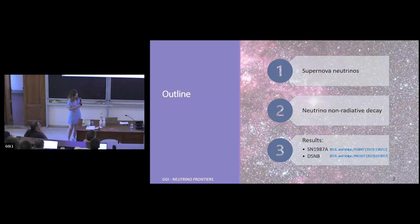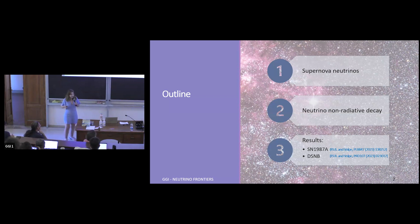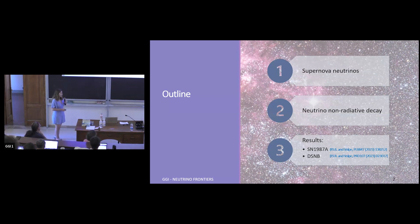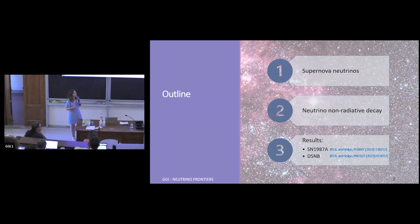This is the outline of my presentation. I'll start by explaining what supernova neutrinos are and how we can describe them. Then I'll explain what we mean by neutrino non-radiative decay and the different cases we're considering. Lastly, I'll give the results: for supernova 1987A we extracted limits on the lifetime-to-mass ratio of neutrinos, and for the DSNB flux we obtained predictions for future observations.